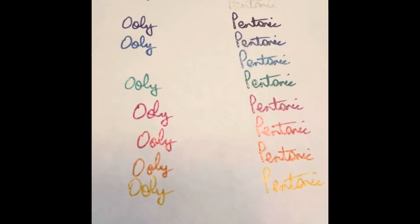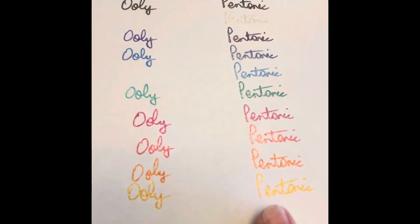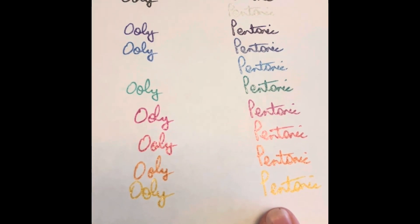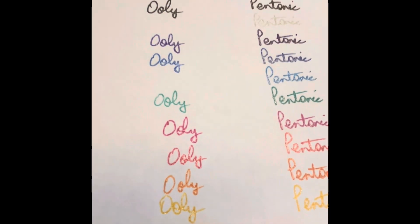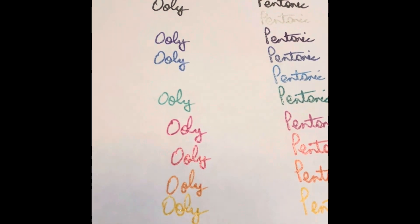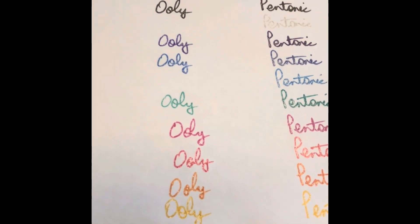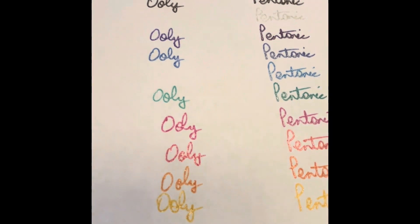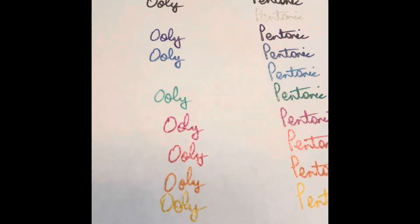Okay so I have swatched the Ooly colors and I put them next to the Pentonic from the last video so that you could see the difference. You can see the shine is just as lovely on these Ooly pens and these Ooly pens run five dollars at Home Goods.